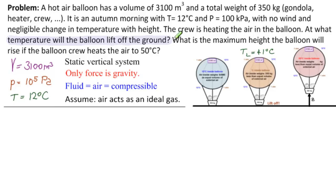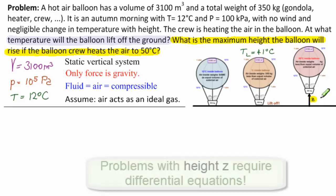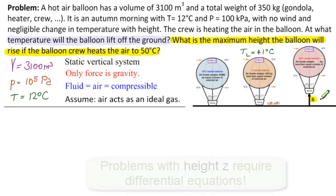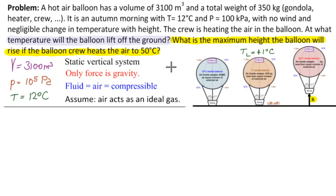Now we're ready to solve the second part: what is the maximum height the balloon will rise if the balloon crew heats the air to 50 degrees Celsius? The minute we start working with heights, we have to start working with differential equations. We have a static vertical system, each state is static, our only force is gravity, our fluid is air which is compressible — so rho depends on Z — and we're assuming air acts as an ideal gas.